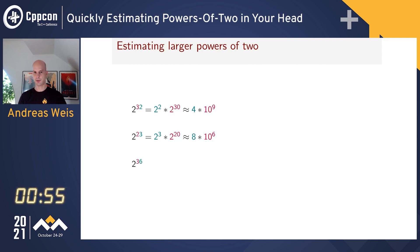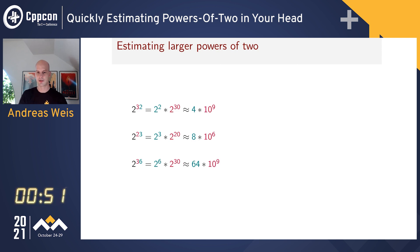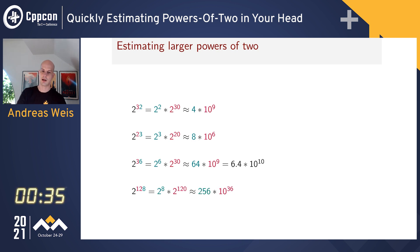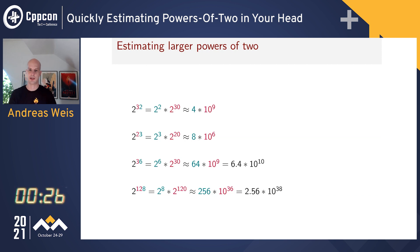One more example: 2^36. Splitting the tens and ones gives roughly 64 billion, which is roughly 6×10^10. This even works for larger exponents like 128 — just split the tens and ones again. The exponent on the 10 becomes 12×3 = 36, giving 10^36, so we estimate roughly 2.5×10^38.